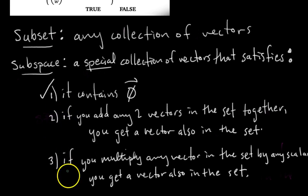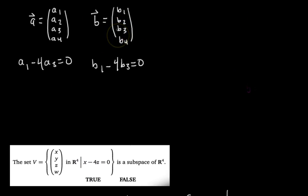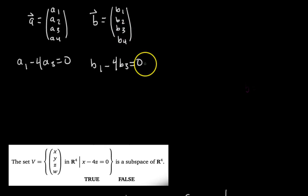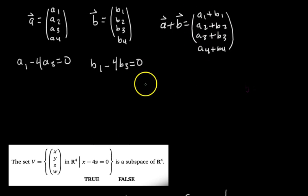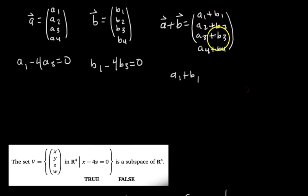To check the second and third conditions, we use these example vectors. Let's compute A plus B. Adding the components gives us A1+B1, A2+B2, A3+B3, and A4+B4. We need to see if this sum is still in the set — that is, does the first entry minus 4 times the third entry equal zero? So we check: does (A1+B1) minus 4(A3+B3) equal zero?